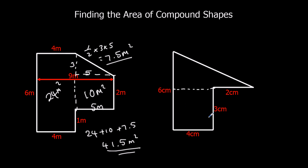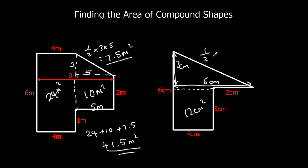This shape here — we've got a rectangle which is 4 times 3, giving 12 centimeters squared. We've got a total base of 2 plus 4, which is 6. The height is 3 up to there and 6 the whole way, so another 3. Half base times height: half times 6 is 3, and 3 times 3 is 9, so it's 9 centimeters squared. Total area: 9 plus 12 is 21 centimeters squared.